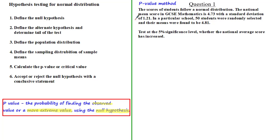We're told that the scores of students follow a normal distribution. The national mean score in GCSE mathematics is 4.73 with a standard deviation of 1.21. In a particular school, 50 students were randomly selected and their mean was found to be 4.81. Test at the 5% significance level whether the national average score has increased. Using our method, the first thing we need to do is define the null hypothesis H0, and since the mean score is 4.73, H0: μ = 4.73.